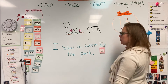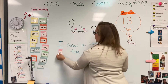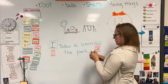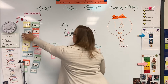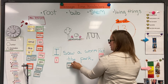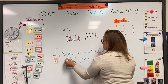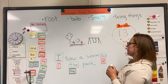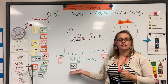Do you see any other snap words in here? I do. I see the word I — we learned I last week. How about any other snap words? I see the word the: T, H, E — the. I think that's it. I saw a worm at the park. And there's our message for today.